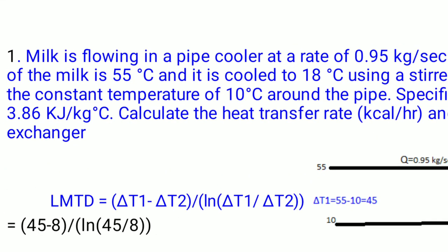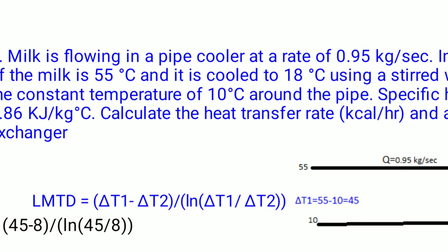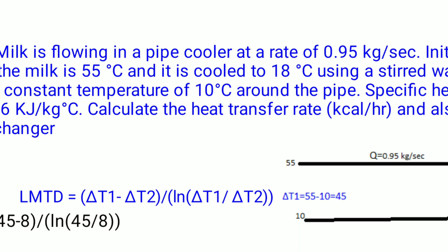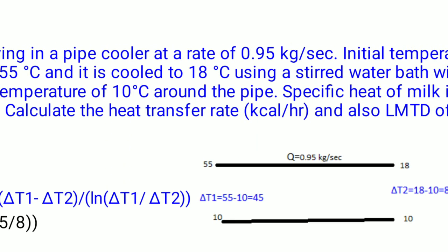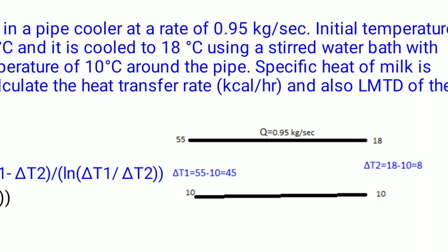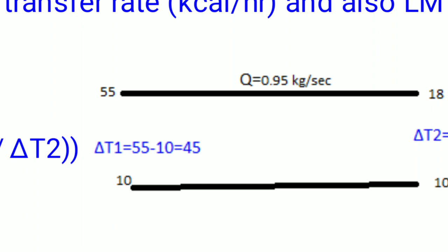Numerical 1: Milk is flowing in a pipe cooler at the rate of 0.95 kg/s. The initial temperature of the milk is 55°C and it is cooled to 18°C using a stirred water bath at a constant temperature of 10°C around the pipe. The specific heat of milk is 3.86 kJ/kg·°C. Calculate the heat transfer rate and LMTD.